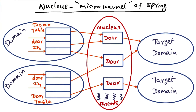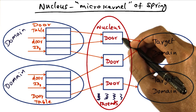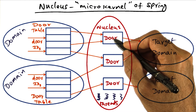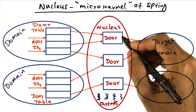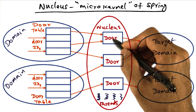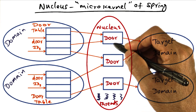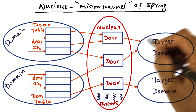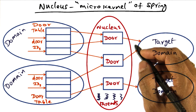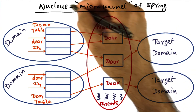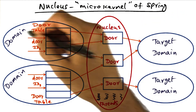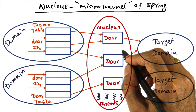The door is essentially a software capability to a domain. Since we're using object orientation, it is represented by a pointer to a C++ object that represents the target domain. A door can be passed from domain to domain, and when it is, it gives those domains the ability to access the entry points specified through the door to the target domain. The Spring kernel itself is a composition of the Nucleus plus the memory management inherent in the fact that these domains represent an address space.